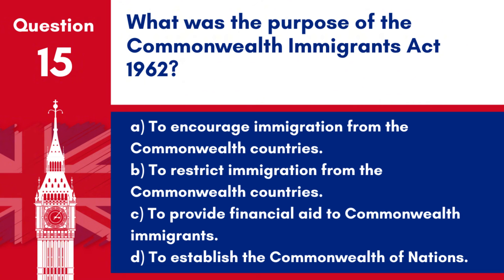Question 15. What was the purpose of the Commonwealth Immigrants Act 1962? a. To encourage immigration from the Commonwealth countries. b. To restrict immigration from the Commonwealth countries. c. To provide financial aid to Commonwealth immigrants. d. To establish the Commonwealth of Nations. Answer: b. The Commonwealth Immigrants Act 1962 was enacted to restrict immigration to the UK from Commonwealth countries, marking a significant shift in British immigration policy.